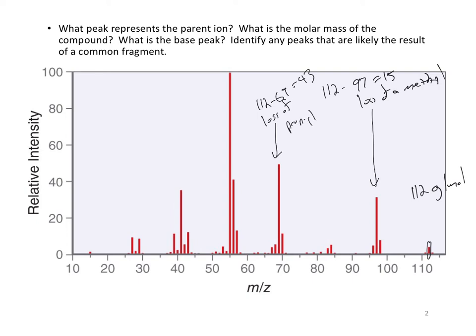And when I look at this peak here, I have 112, now let's write it over here, 112 minus 55. That gives me 57. And so that is likely the loss of a butyl group.